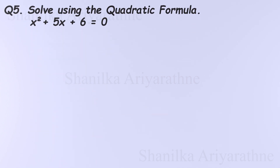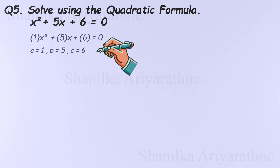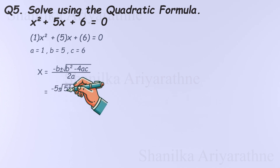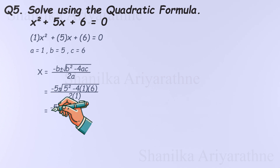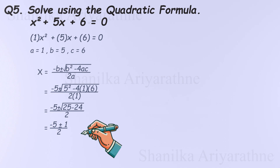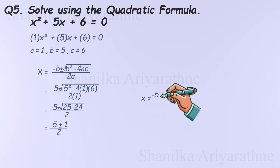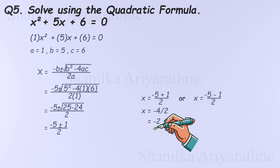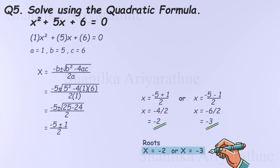Let's solve a previous problem using the quadratic formula: x-squared plus 5x plus 6 equals 0. The first step is to identify a, b, and c — this is crucial. a is 1, b is 5, c is 6. Substituting into the formula: x equals negative 5 plus or minus the square root of 25 minus 24, all divided by 2. Since 25 minus 24 is 1 and the square root of 1 is 1, we get negative 5 plus or minus 1 divided by 2. This gives two solutions: negative 2 and negative 3 — the same solutions as before, without guessing.